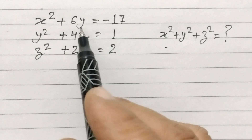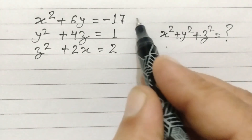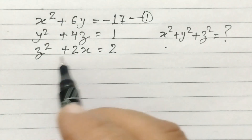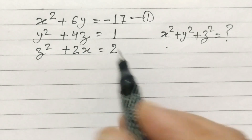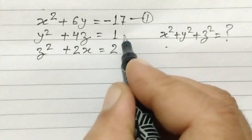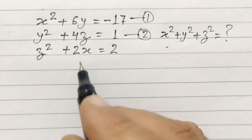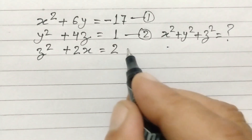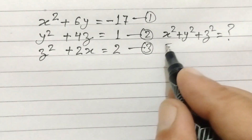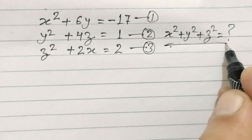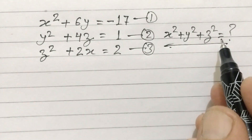x squared plus 6y is equal to minus 17, equation first. And y squared plus 4z is equal to 1, equation second. z squared plus 2x is equal to 2, equation third. Here we have to find out the value of x squared plus y squared plus z squared.